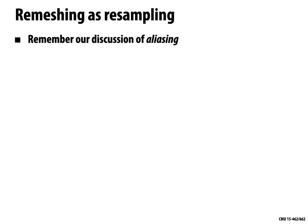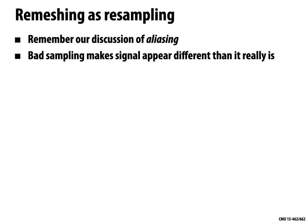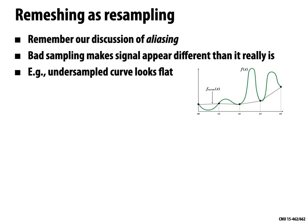Let's start by talking about the problem of resampling geometry, more commonly known as remeshing. Aliasing shows up throughout computer graphics — a bad sampling and reconstruction of a signal can make it appear different than it actually is. A curve with lots of high-frequency features, if under-sampled, produces a piecewise-linear reconstructed curve that looks flat even though the samples are exactly on the original signal.